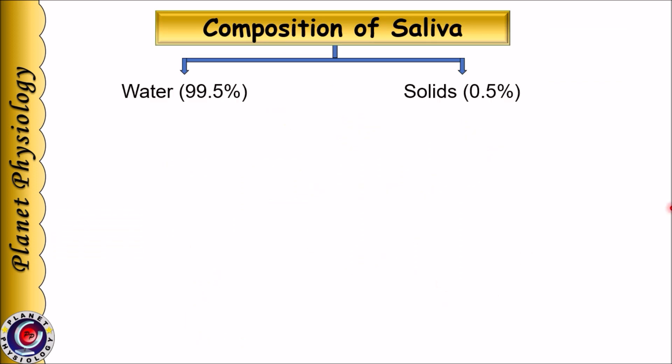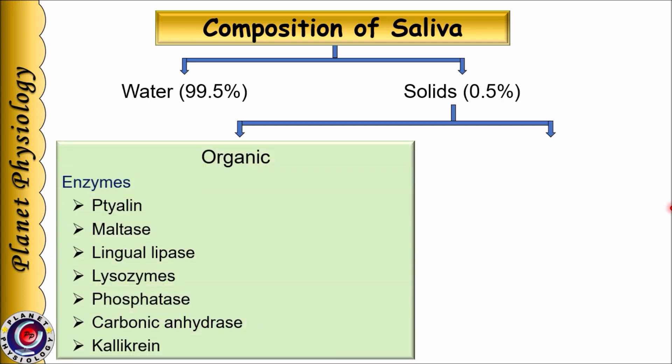Now let us study the composition of saliva. It contains 99.5% water and just 0.5% solids. Solids can be divided into organic and inorganic constituents. Organic constituents include enzymes like ptyalin, which is salivary amylase, small quantities of maltase and lingual lipase, then lysozyme, phosphatase,